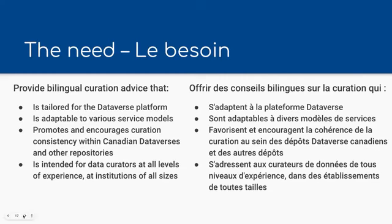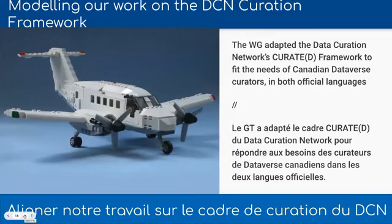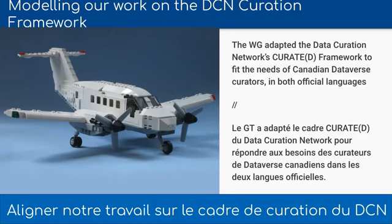After significant research, our working group determined that the best path forward would be to adapt the DCN's CURATED model to fit within our own ecosystem. The CURATED framework is a proven methodology — it's adaptable and stewarded by like-minded individuals, many of whom are on this call. The division between Canada and the US is just a line on a map. Many times Canadians and Americans look at each other and say, 'you guys are like us.' And it's kind of the same way with what we saw with the CURATED framework.